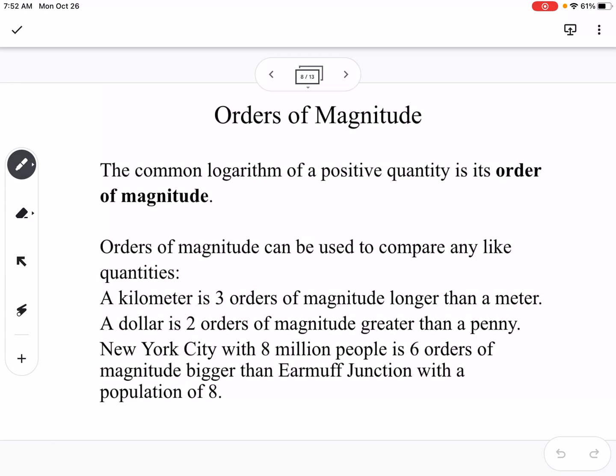If we have 1 kilometer, that's 1,000 meters. A dollar is 2 orders of magnitude greater than a penny, because we know that there are 100 pennies in 1 dollar.